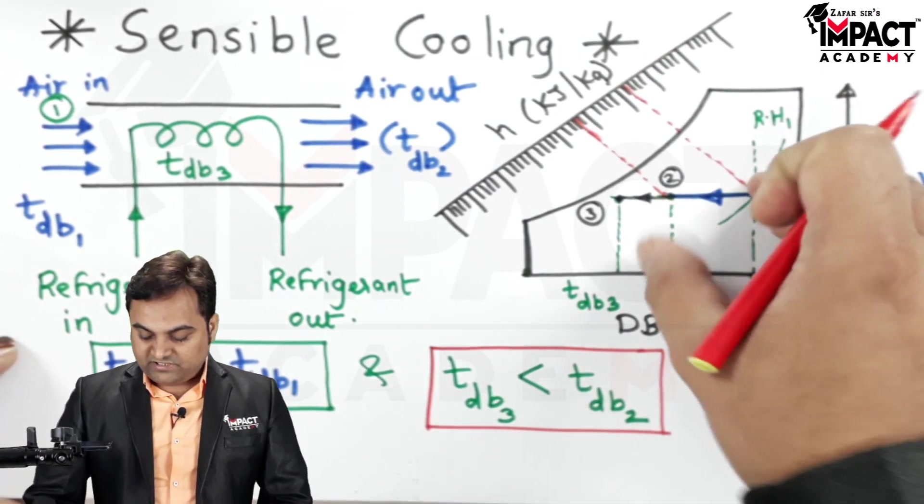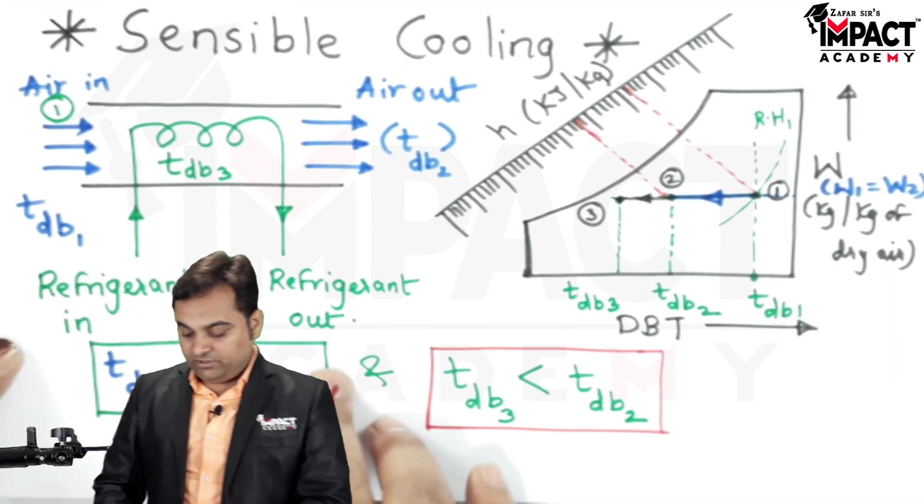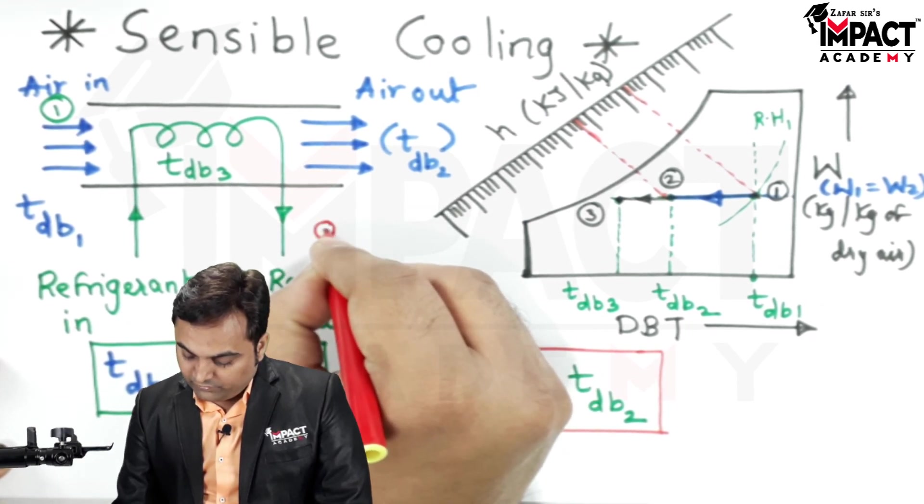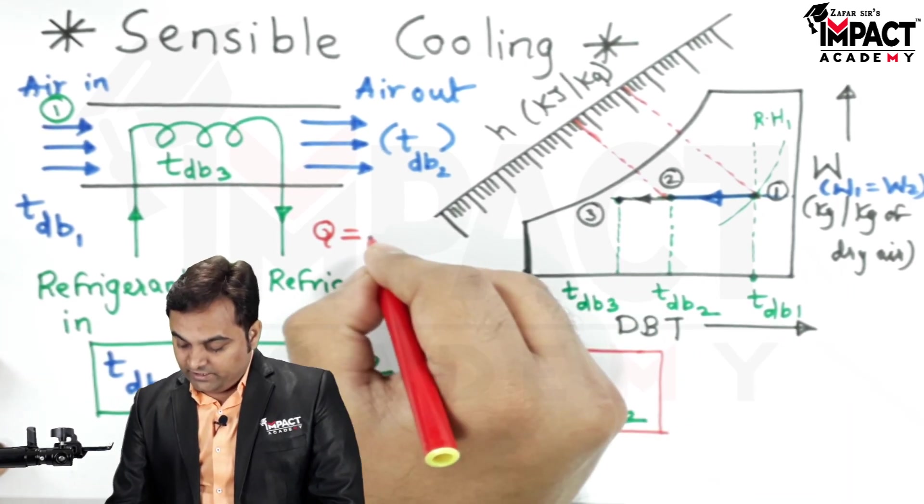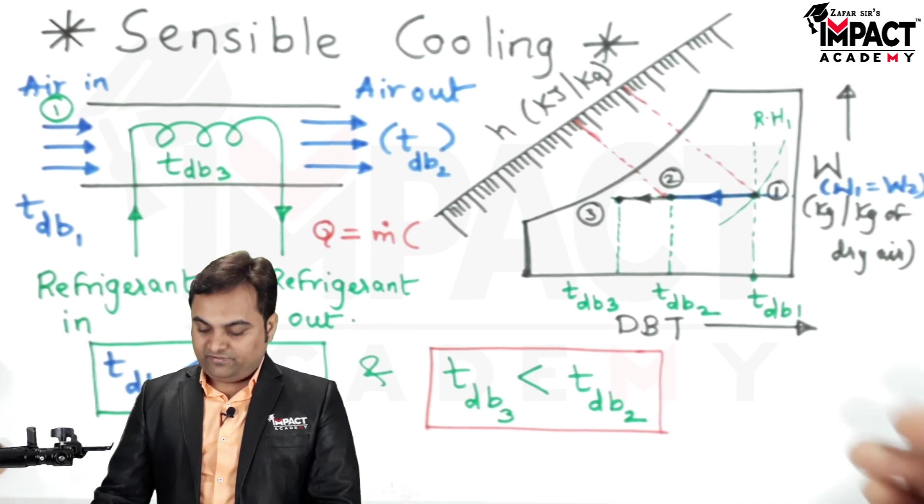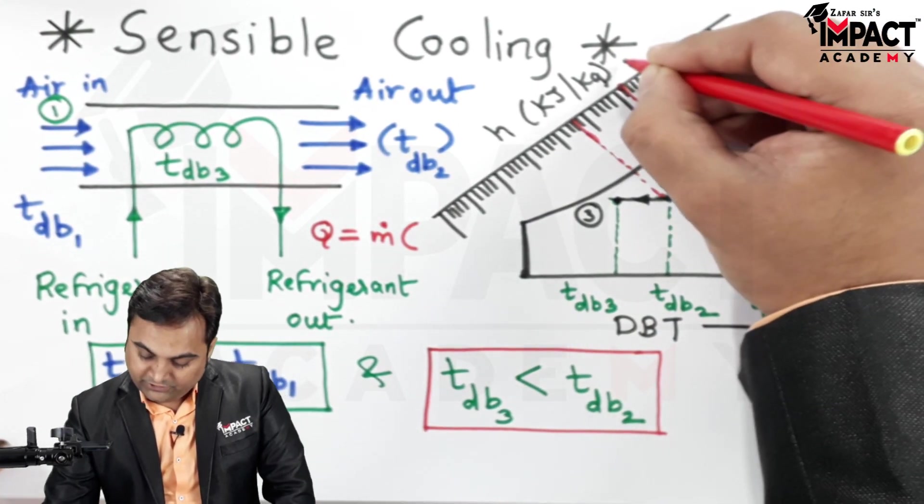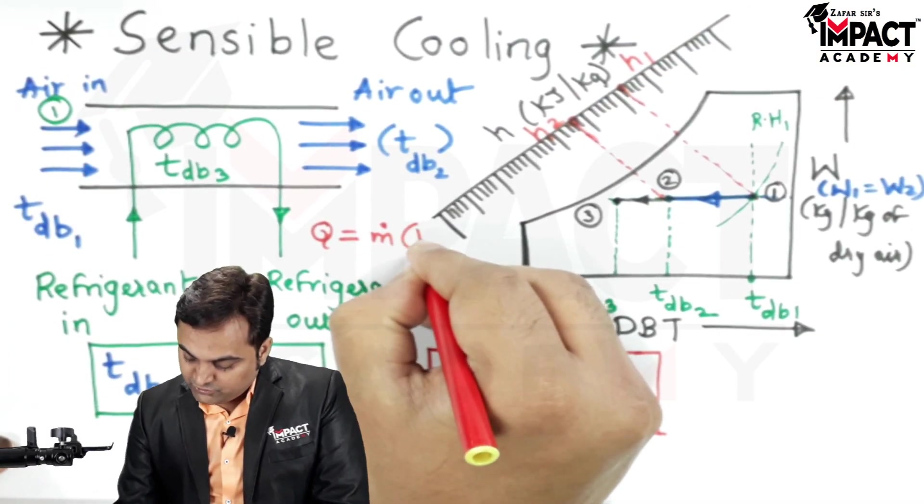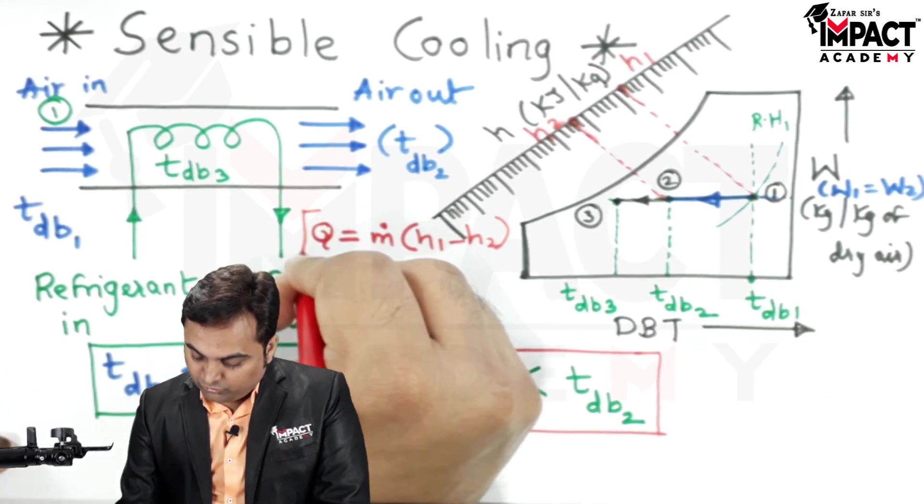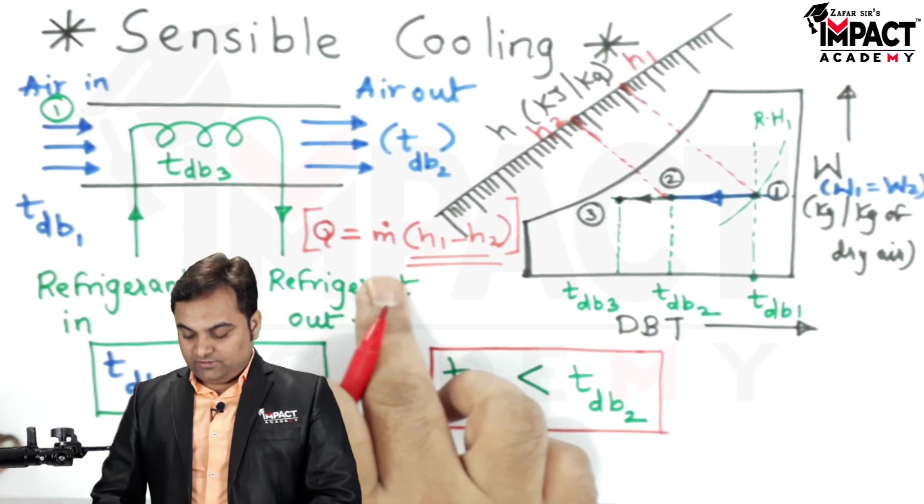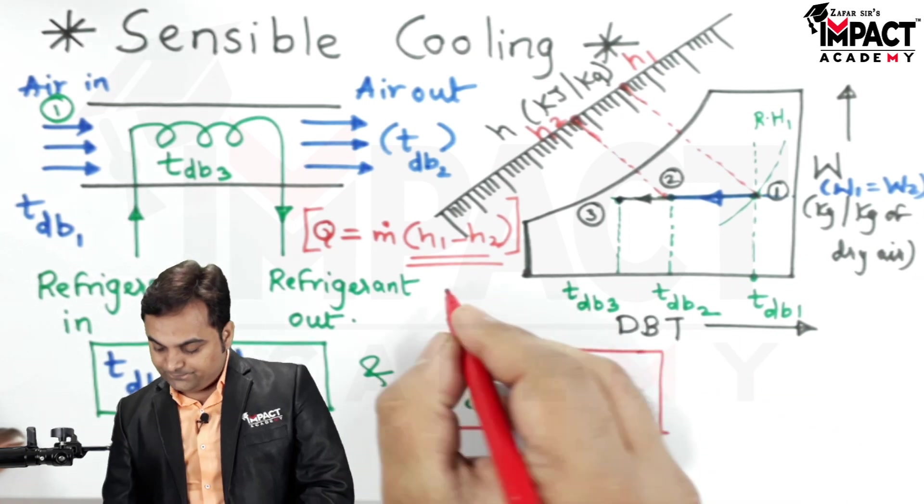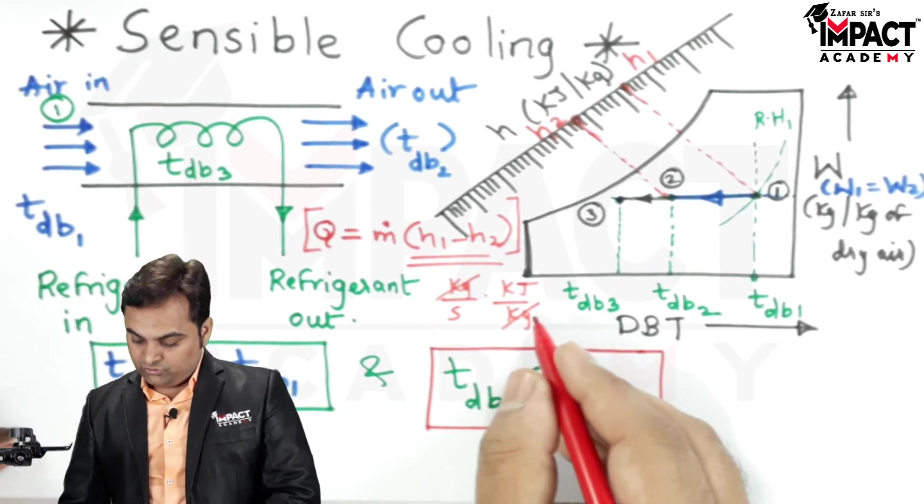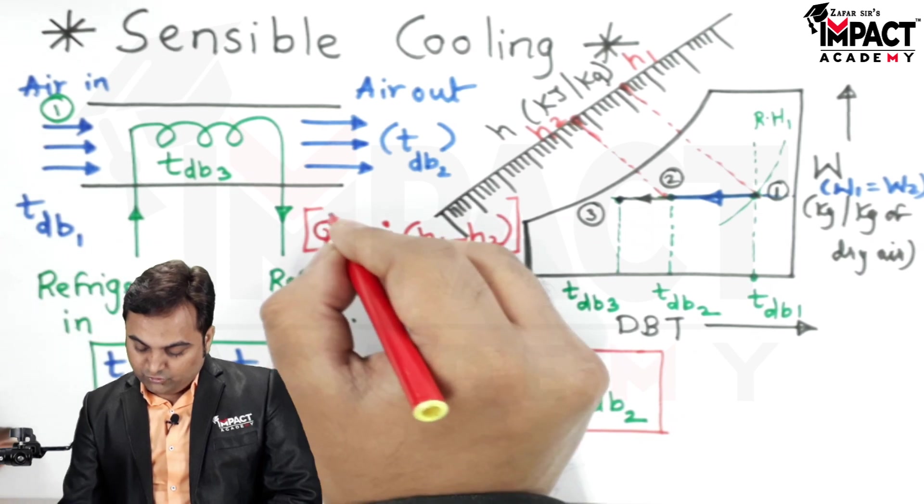h1 minus h2 would give us the amount of heat which has been removed from the air during the sensible cooling process. So amount of heat removed, I am denoting it as capital Q, that is the total amount of heat removed. It would be the mass flow rate of air times the enthalpy difference. That is h1 is over this point and here we have h2, so m dot times h1 minus h2 gives us the amount of heat which has to be removed from a given air. And the unit here, m dot is in kg per second, specific enthalpy kilojoule per kg. Kg and kg will get cancelled out so kilojoule per second is kilowatts, so finally the unit of Q would be in terms of kilowatt.